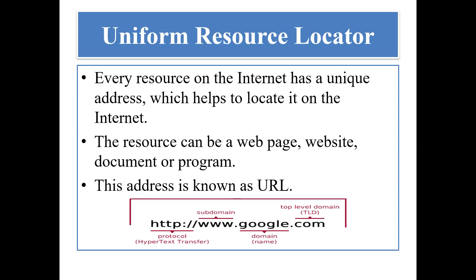The first term is uniform resource locator, that means URL. Every resource on the internet has a unique address which helps to locate it. A resource can be an image, a text file, a PDF file, a video, a web page, a website, a document, or a program. This address is known as URL. As you can see on your screen, HTTP is a kind of protocol, www is a subdomain, and google.com is a URL. So www.google.com is an example of a URL — uniform resource locator.